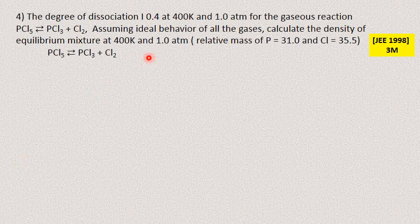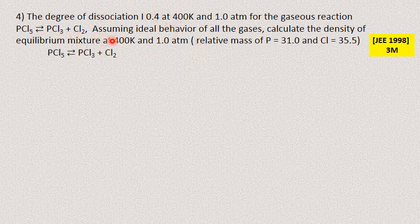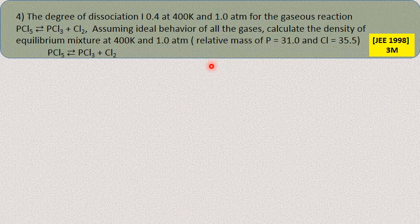Next question: the degree of dissociation of PCl5 is 0.4 at 400 K and 1 atmosphere. Assuming ideal behavior of all gases, calculate the density of the equilibrium mixture at 400 K and 1 atm. The reaction is PCl5 → PCl3 + Cl2. To find density, we use the ideal gas equation PV = nRT. Rearranging: density (d) = PM/RT, where M is the molecular mass.